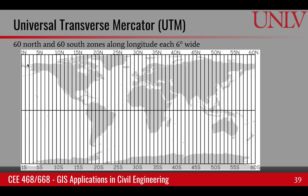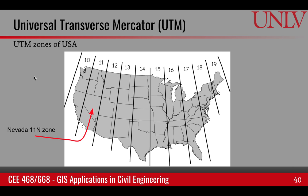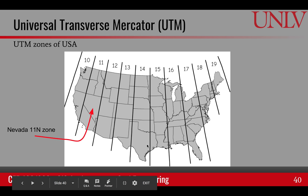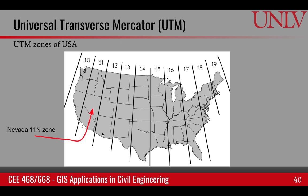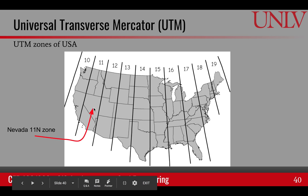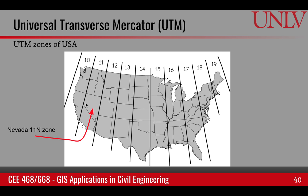The UTM zones are named based on their location — one north, two north, three north, and similarly one south, two south, three south, and so on. Each zone has its own local Cartesian coordinate system using meters. For the United States, we cover zones 10 north to 19 north. Nevada in particular is in zone 11 north, which you'll likely encounter in various data sets in the labs.